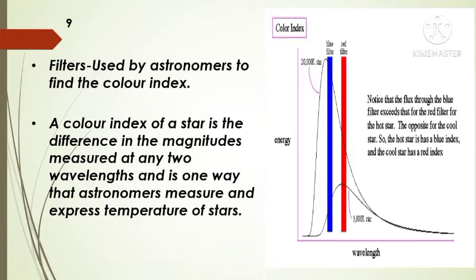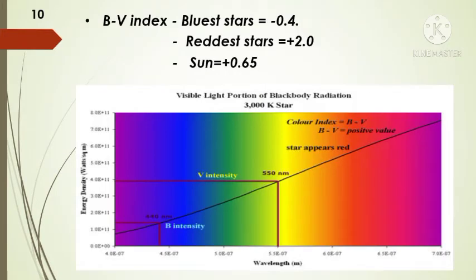The B minus V color index of stars ranges from minus 0.4 for the bluest stars with temperatures of about 40,000 Kelvin to plus 2.0 for the red stars with temperatures of about 2,000 Kelvin. The B minus V index for the sun is about plus 0.65. Note that by convention the B minus V index is always the bluer minus the redder color.